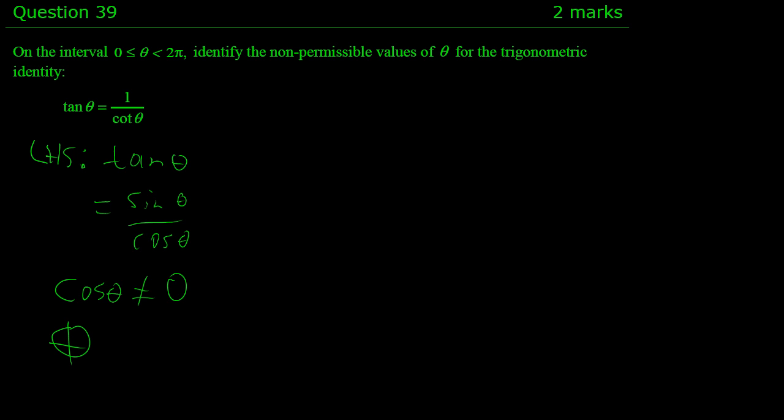So if we think about the unit circle here, we're thinking, where is the x-coordinate 0 in the unit circle? And the x-coordinate is 0 at π/2 and 3π/2. So those are two non-permissible values for the left-hand side.